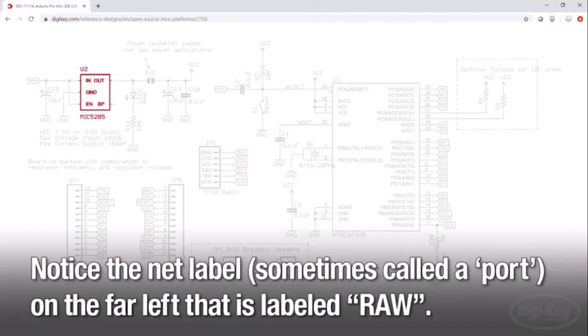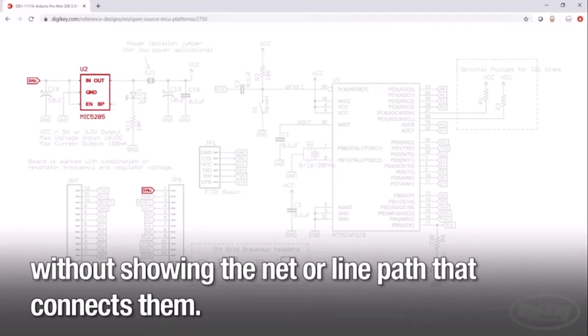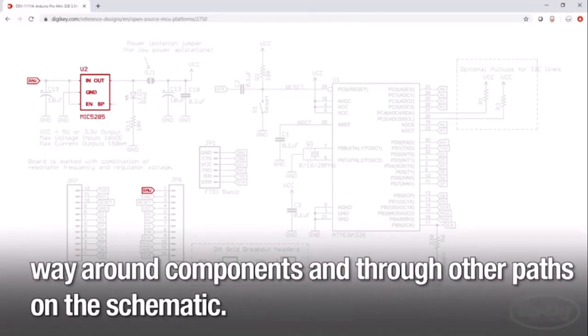connections. Notice the net label, sometimes called a port, on the far left that is labeled RAW. This is a net label that indicates a connection to another component with the same net label without showing the net or line path that connects them. This method maintains simplicity and readability by eliminating scores of long paths winding their way around components and through other paths on the schematic.